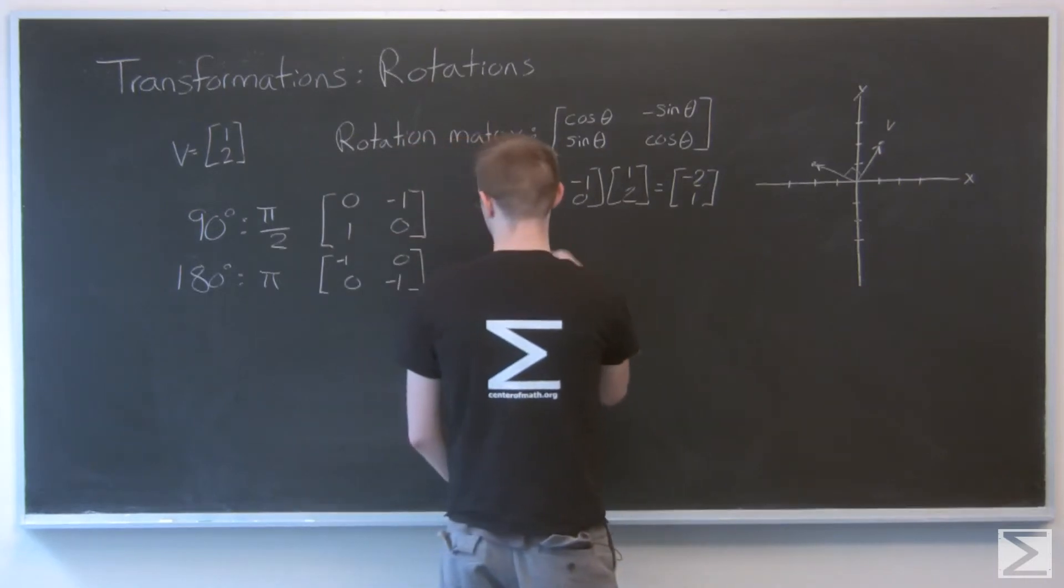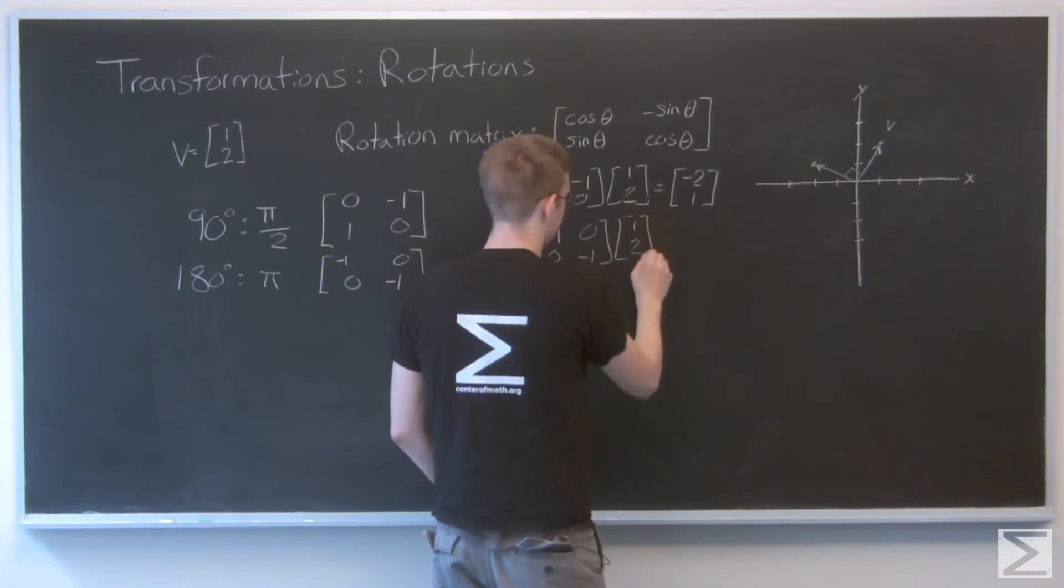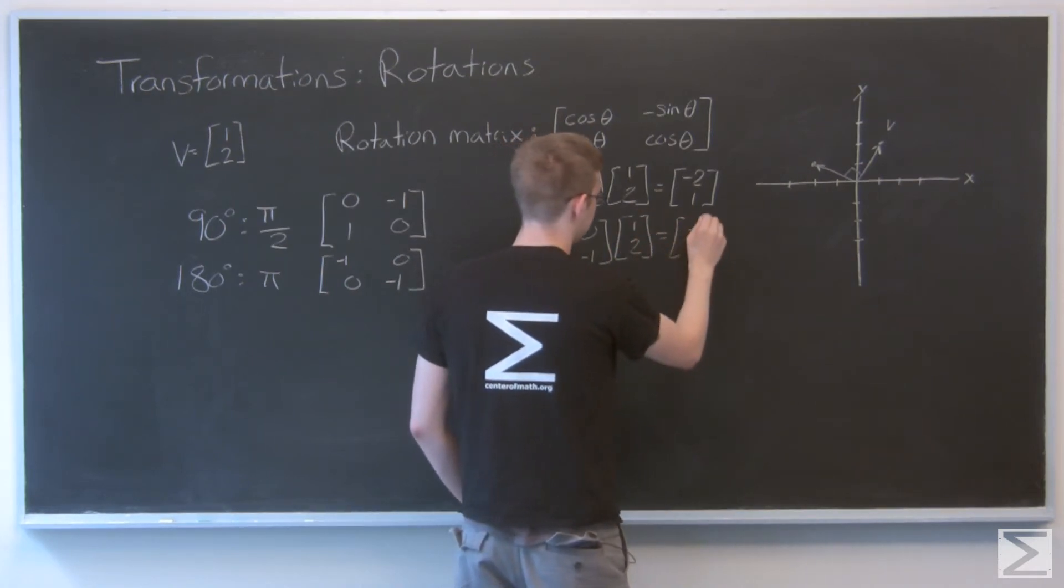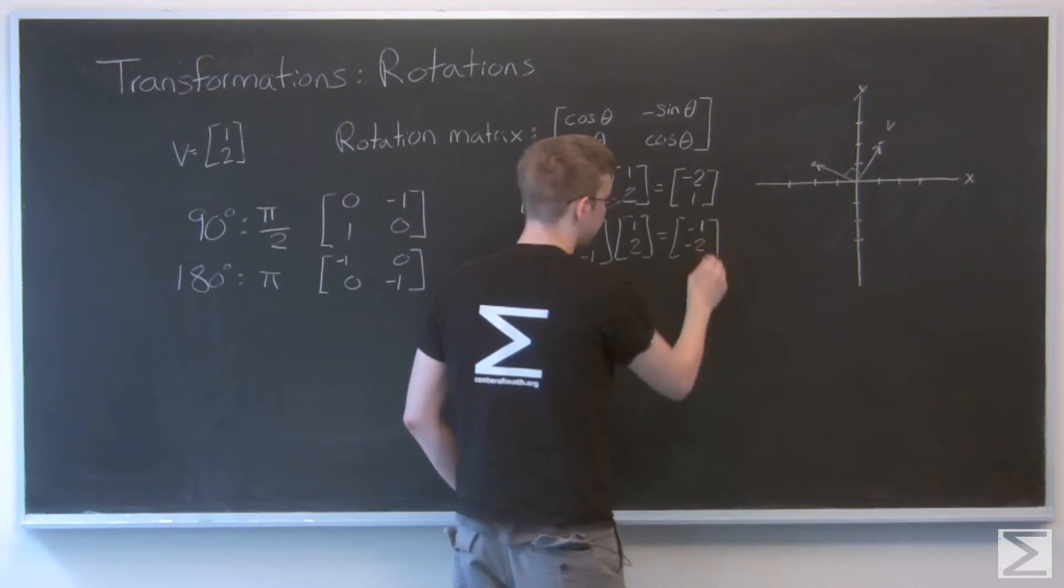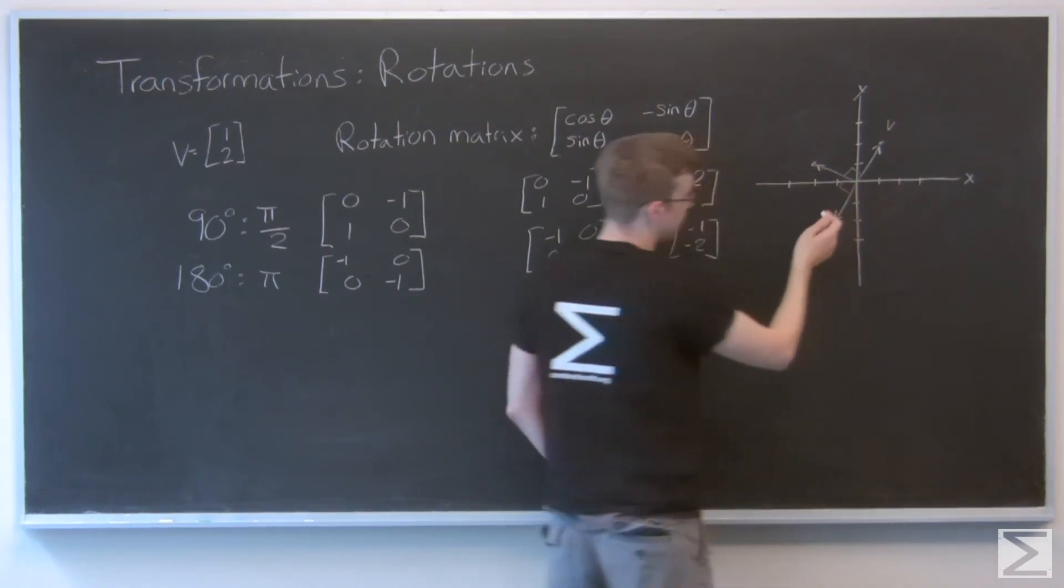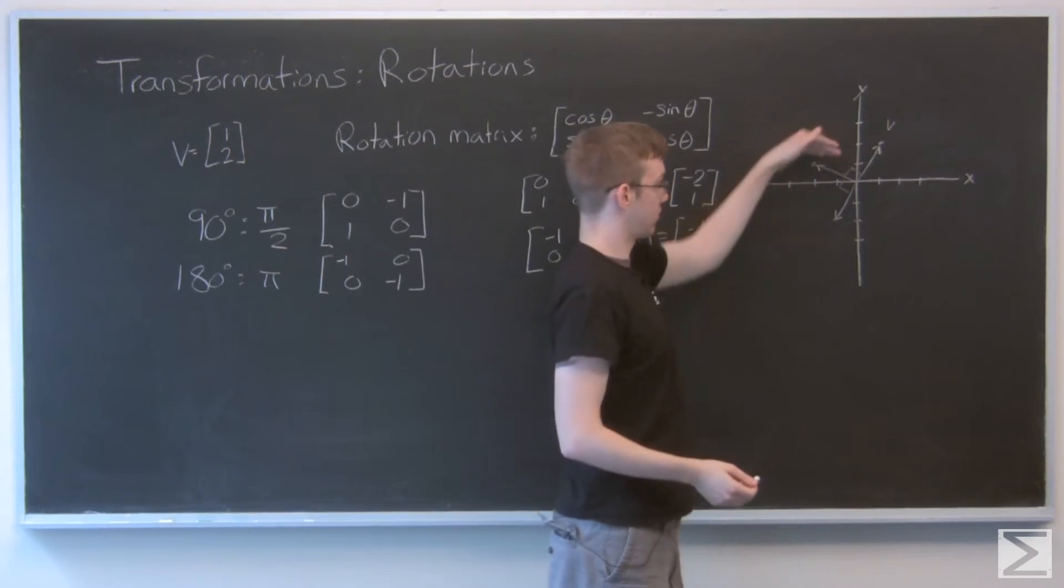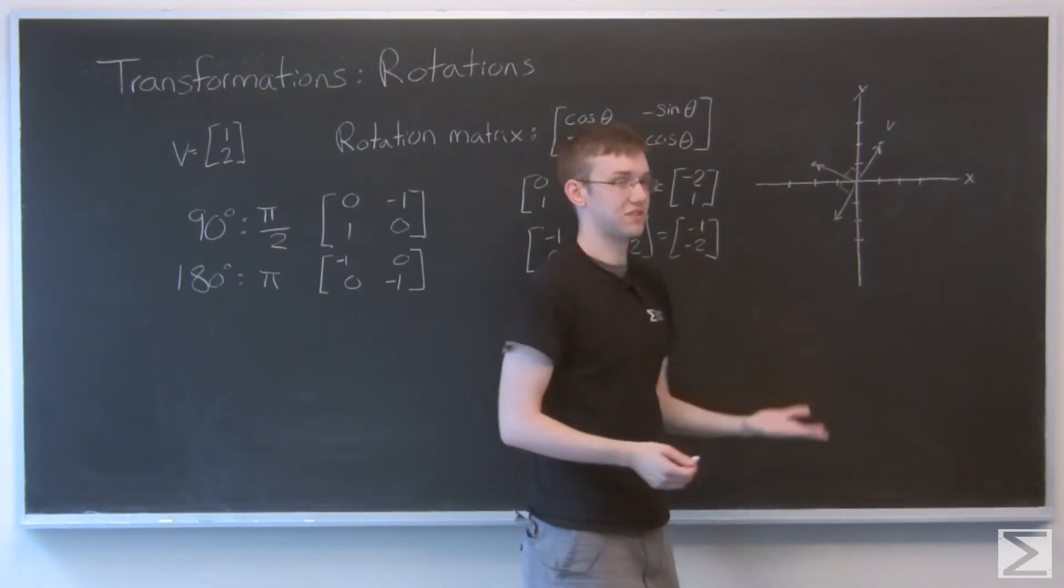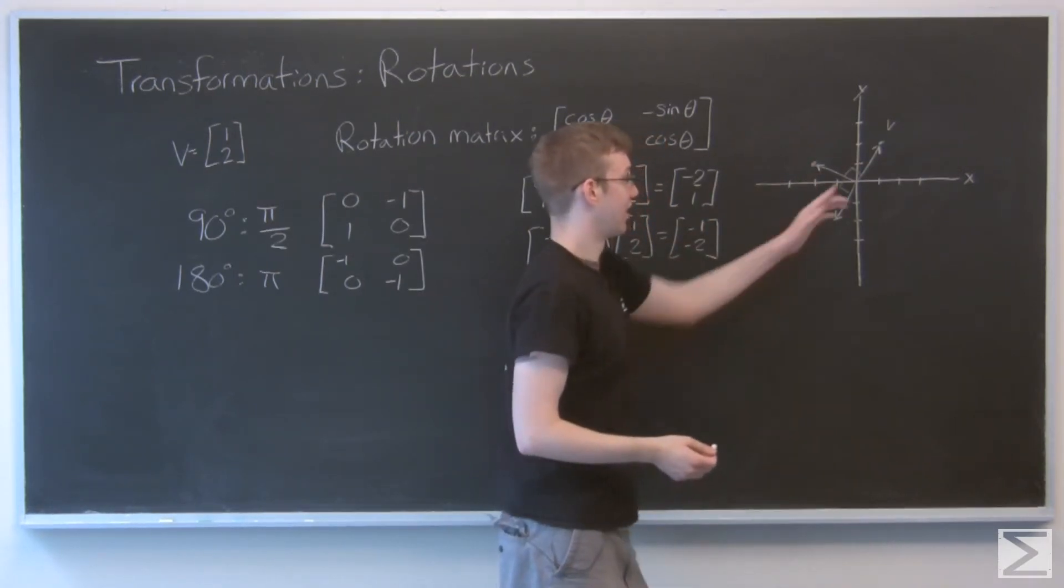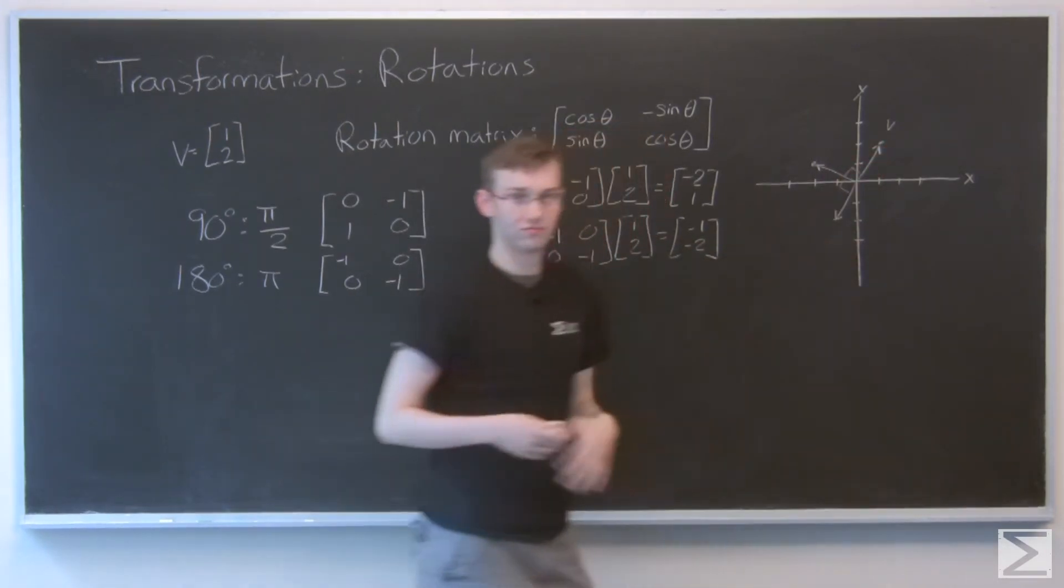So as can be expected, we'd get negative 1, negative 2. So negative 1, negative 2. That's another 90 degrees from where we first were. That's 180 degrees turned from where we started. And it's basically just a scaling of this original vector by negative 1, so in the opposite direction. Cool.